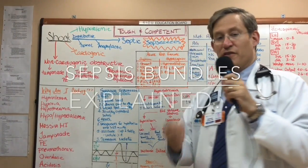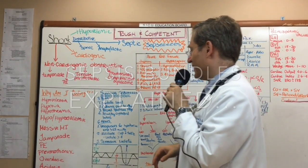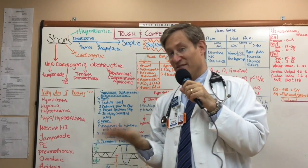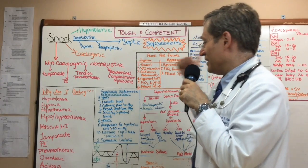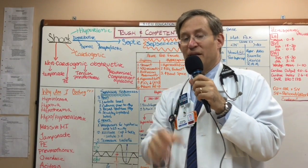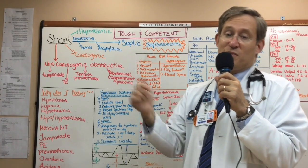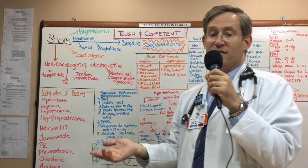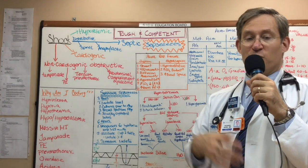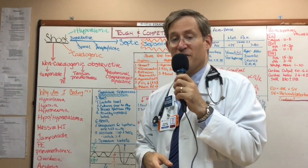Here is a description of the 3-hour and 6-hour bundles for the surviving sepsis campaign guidelines. At three hours, for a patient who meets criteria for severe sepsis syndrome: infection plus two or more SIRS criteria is sepsis; sepsis with acute sepsis-induced organ dysfunction is severe sepsis syndrome; and if the patient remains vasopressor dependent after appropriate volume resuscitation, the patient meets criteria for septic shock.